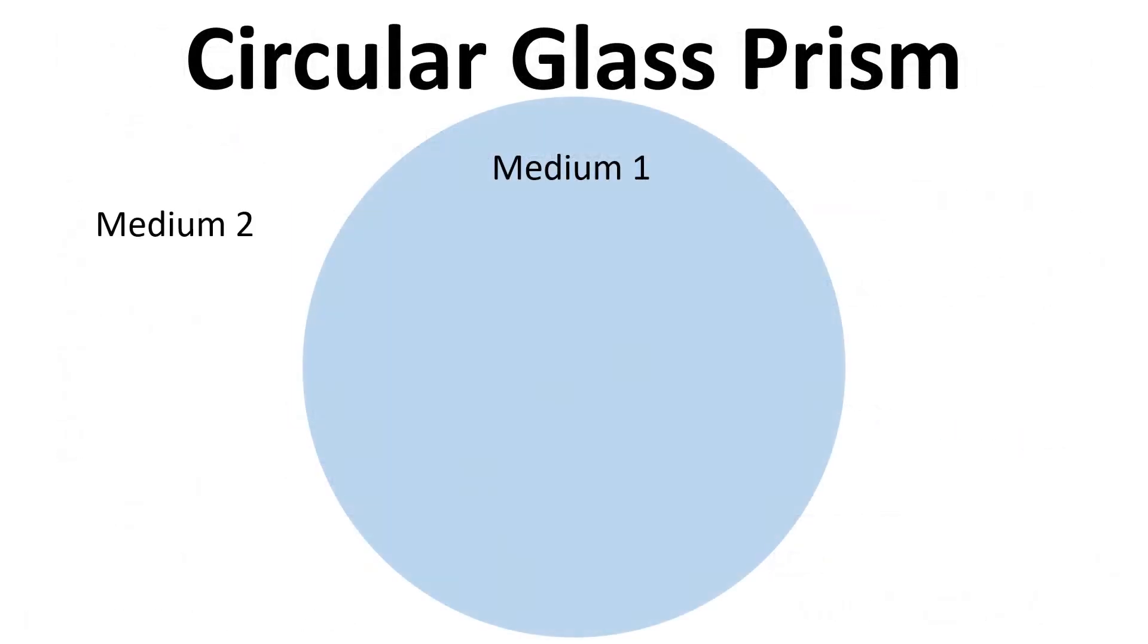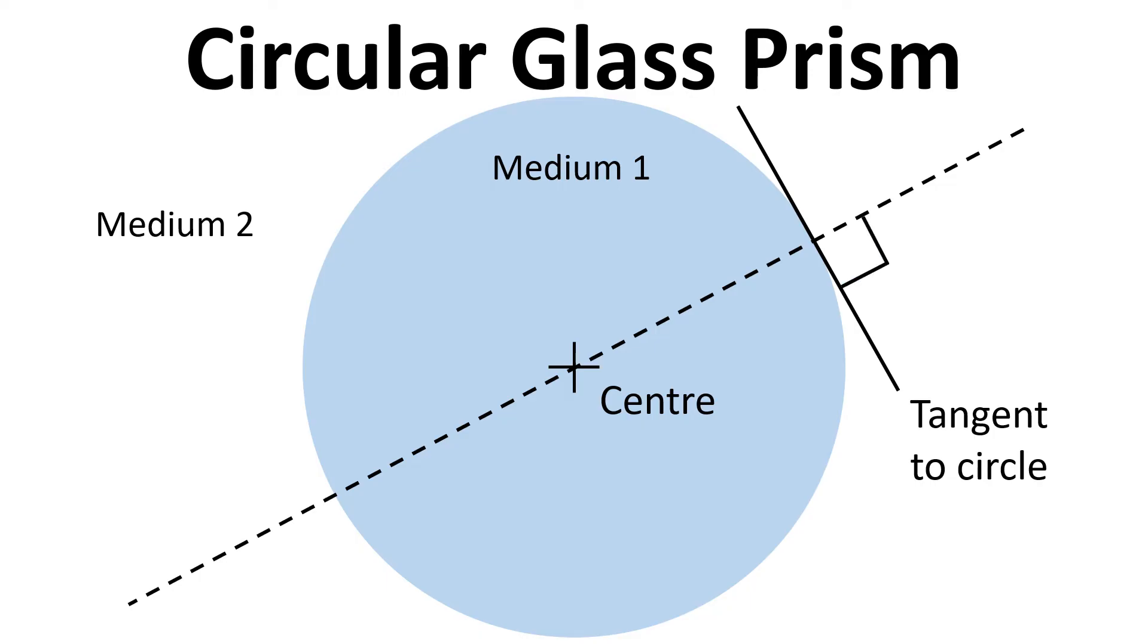Now we're going to move on to look at a circular glass prism and how light interacts with this. We're going to mark in the center point and draw a normal line through this. If we draw a tangent at the point where the center line, this dashed line, exits the circular prism, then what we find is that that is at 90 degrees. That has an important consequence.